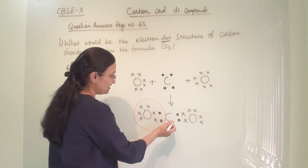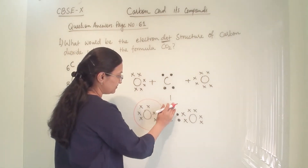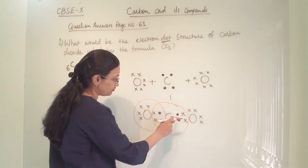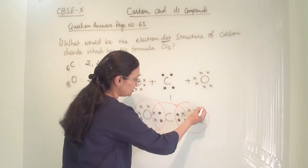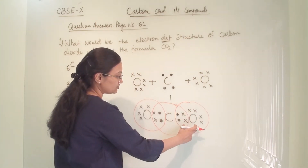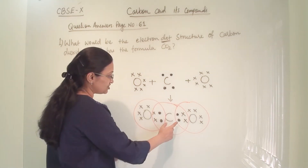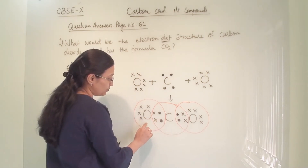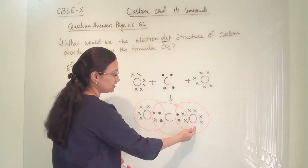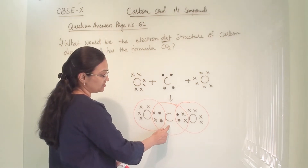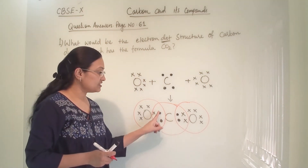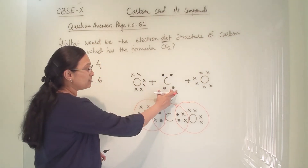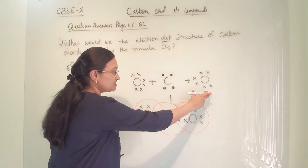Oxygen's octet is completed. Similarly for carbon, carbon's octet is also completed — 4 electrons on one side and 4 electrons on the other side. And for the other oxygen, the octet is also completed. So in turn, carbon is sharing all 4 of its electrons to the 2 oxygens. One oxygen shares 2 electrons with carbon, and the other oxygen also shares 2 electrons with carbon. Carbon's requirement is 4 electrons, whereas oxygen's requirement is 2 electrons.